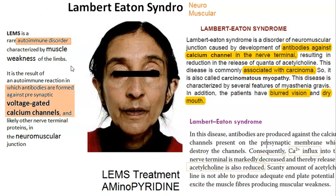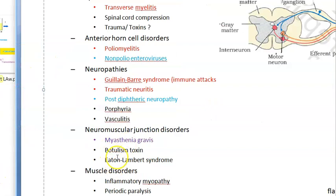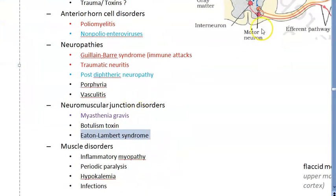Lambert-Eaton syndrome affects the neuromuscular junction. The key difference from myasthenia gravis: in Lambert-Eaton syndrome, patients have weakness in the morning itself before starting any work, whereas in myasthenia gravis, weakness appears at the end of the day. Wherever you write myasthenia gravis, write Lambert-Eaton alongside it.